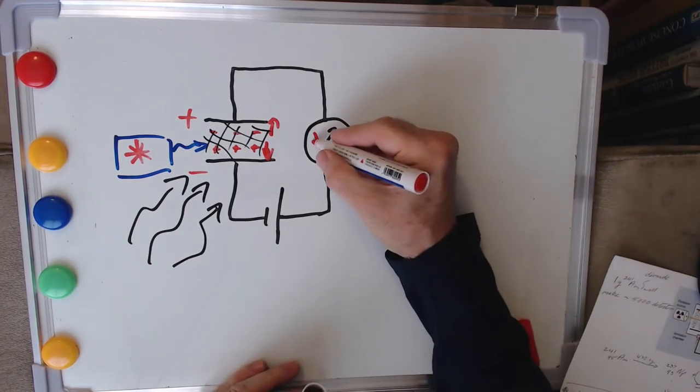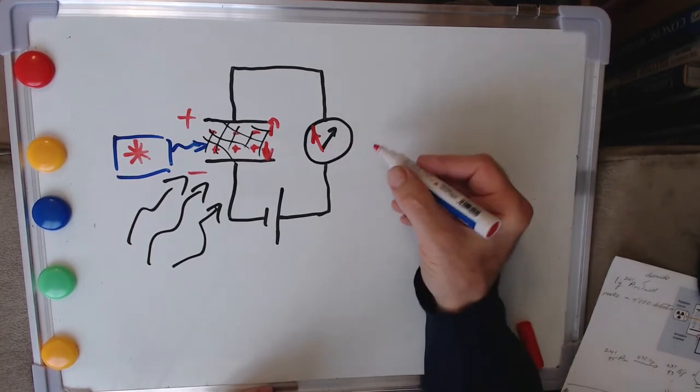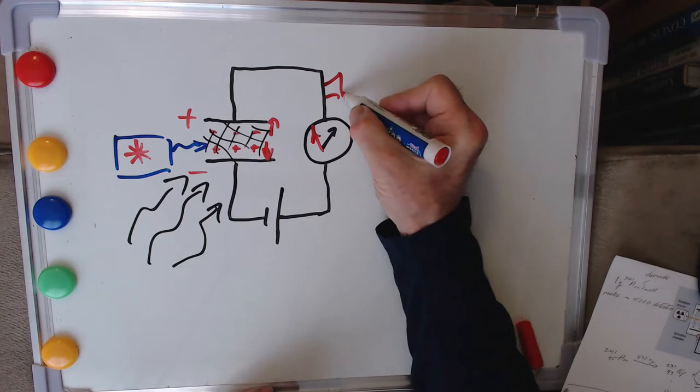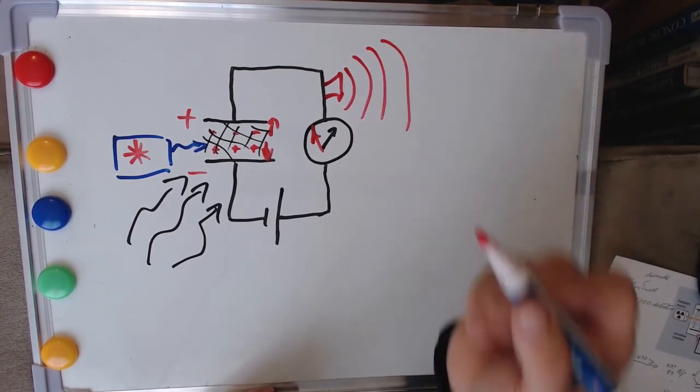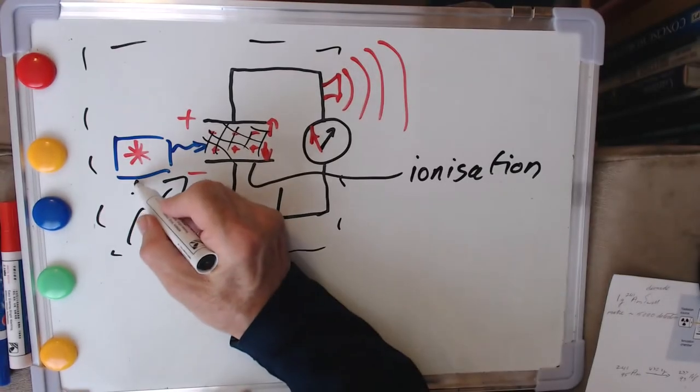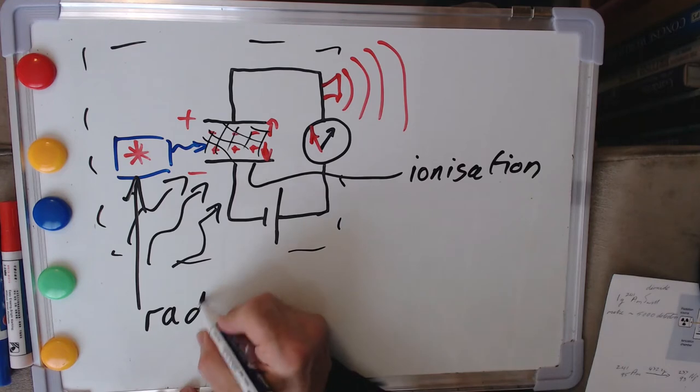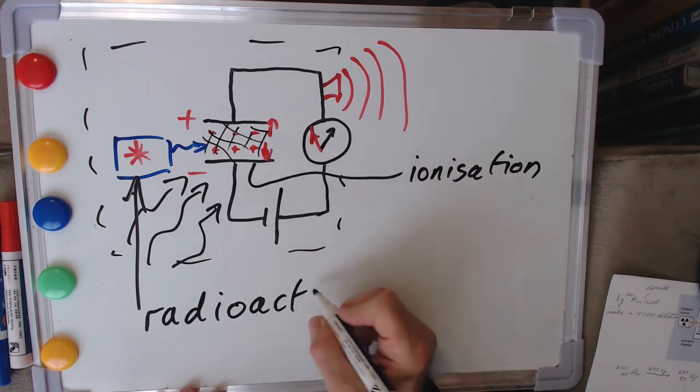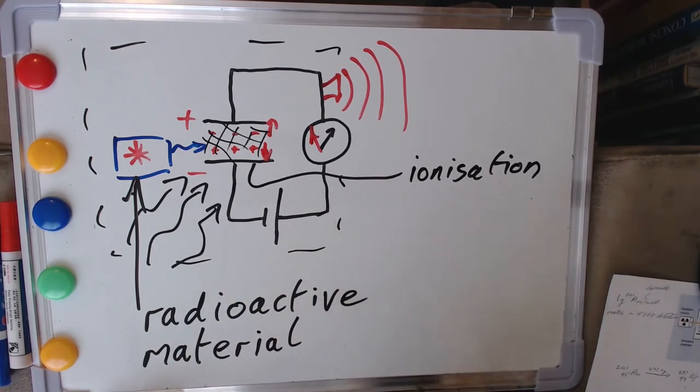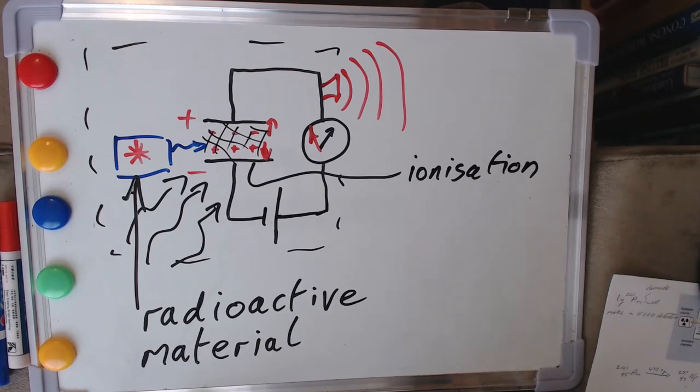So of course the result of that is that the current measured by our circuit drops, and it's that dropping of the current, the falling of the current, that then produces from some loudspeaker or other, let's just draw our loudspeaker on the side, that then produces the alarm signal that tells us that something is amiss. So we need to talk about this. We need to talk about our source of radiation which is coming from a radioactive material, and it's a rather particular one and it's actually a rather esoteric one, and that's really what I want to focus on in the next section.